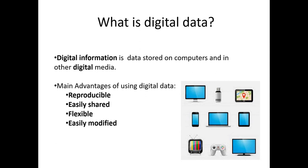The first thing to discuss is digital data — what it is and how we use it. Previously we dealt with datasets that were CSV files containing text, numbers, or other digital information. Digital information is simply data stored on computers and other digital media such as smartphones, TVs, pen drives, or any other electronic storage device. Any information you can store on a computer is called digital information, also known as digital media.